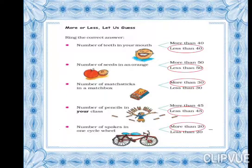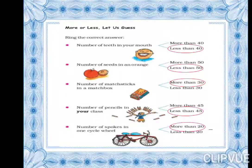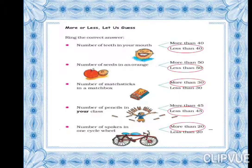Number of spokes in one cycle wheel — ek cycle mein do wheels aate hain, usmein kitne spokes hote hain? Toh more than 20. So these you have to do in your textbook. Bye everyone.